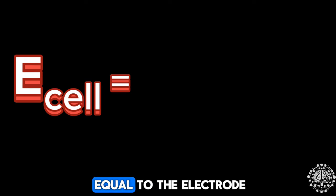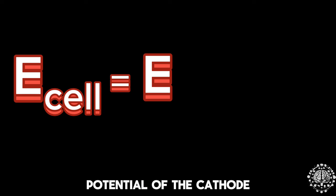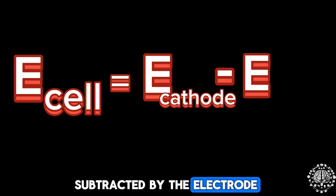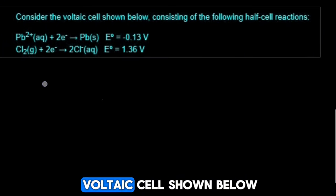Welcome. In this video we will deal with cell potential. The cell potential is equal to the electrode potential of the cathode subtracted by the electrode potential of the anode. Let's take this question here for example. Consider the voltaic cell shown below consisting of the following half cell reactions.